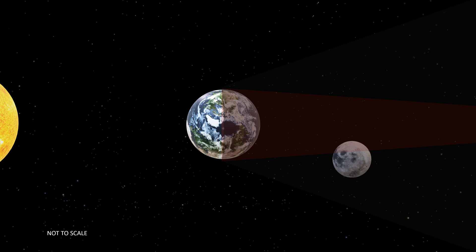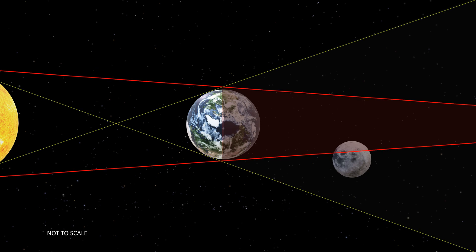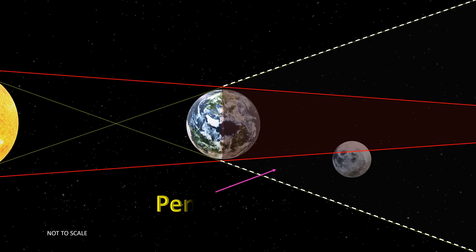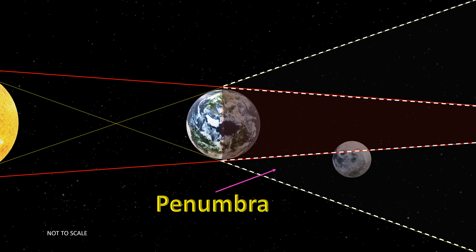Earth's shadow can be divided into two distinctive parts: a larger, lighter shadow known as the penumbra, and a smaller, darker shadow known as the umbra.